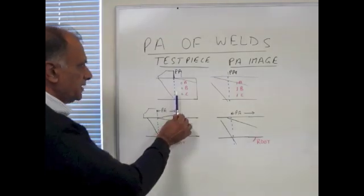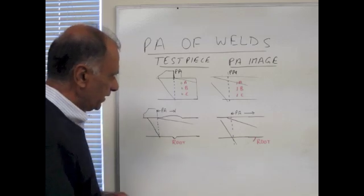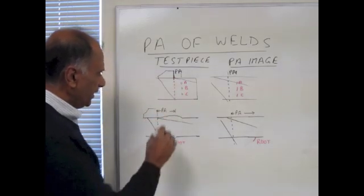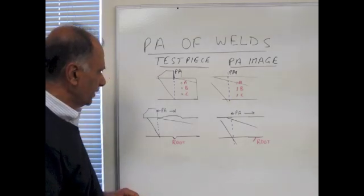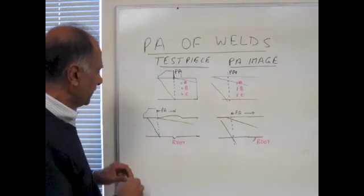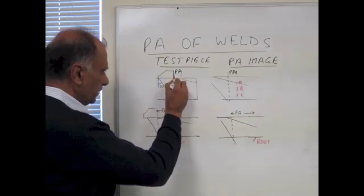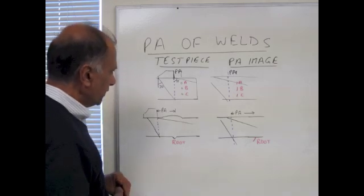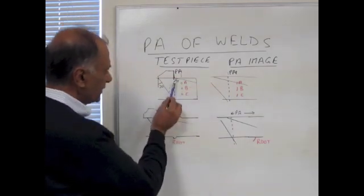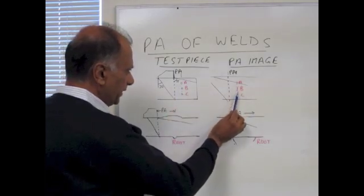On the left side is the test piece and on the right side is the image on the phased array machine. Here we have a phased array probe placed on a block with three side-drilled holes A, B, and C. The phased array machine is sweeping the beam from about 30 degrees to 75 degrees. The image of this inspection is shown on the right side, and we would see the same lines on the screen with the holes showing up as A, B, and C.